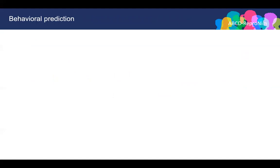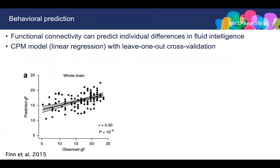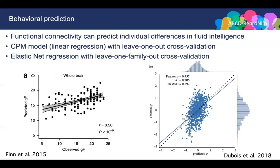So far I have explained two supervised models — linear ridge regression and kernel ridge regression — for behavior prediction. In the next few slides, I will show some behavior prediction results in the literature. Finn 2015 is probably the first paper showing that functional connectivity can predict individual differences in fluid intelligence. They use a linear regression-based model and perform leave-one-subject-out cross-validation for behavior prediction, showing decent prediction accuracy in predicting fluid intelligence using functional connectivity.